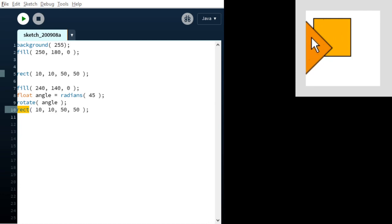What we see is this is the former rectangle unrotated and this is the rotated one. We can see that that is rotated about the origin by 45 degrees.